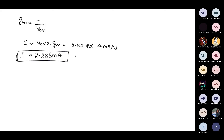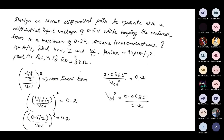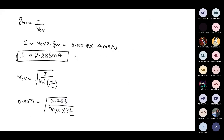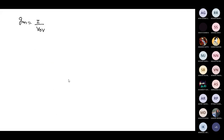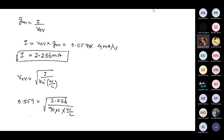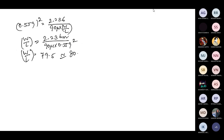Next, we calculate the width-to-length ratio W by L. With overdrive voltage known, bias current known, and KN dash equal to mu times COX given as 90 microamps per volt squared, we use the drain current equation to find W by L. The result is approximately 79.5, which can be rounded to 80.